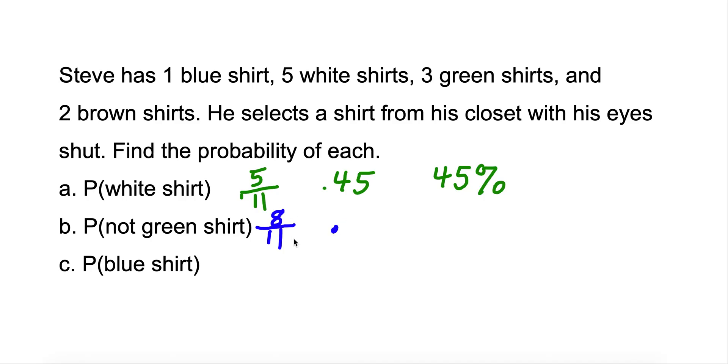To find the decimal, we take 8 divided by 11, and that gives us .72 repeating. So we'll just say .72, and for our percentage, about 72%.